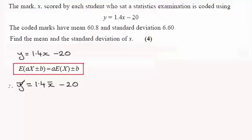Now we know the mean of Y, it's 60.8, so we just need to put that in as 60.8 and it's going to equal 1.4 times the mean of X minus 20. So it's just a question of rearranging this. Adding 20 to both sides, so X bar would be equal to 80.8.